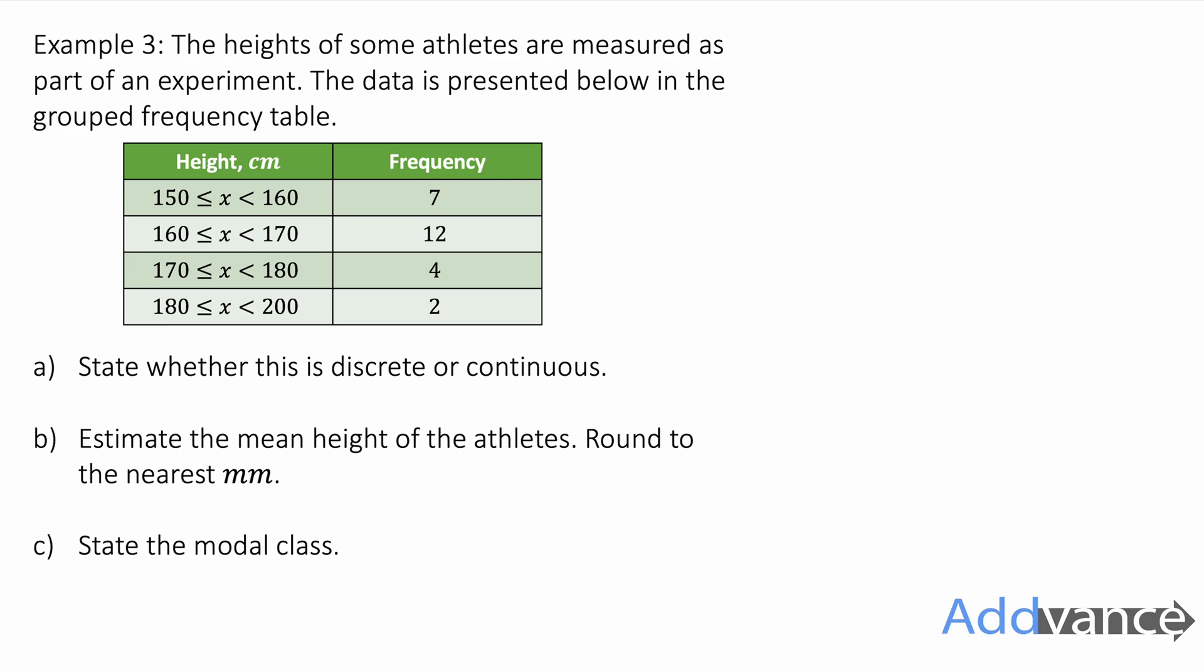I have one more example to show you. And this is for a grouped frequency table. It says the heights of some athletes are measured as part of an experiment. The data is presented below in a grouped frequency table. And it's got the height between 150 and 160. So it's a grouped frequency table. The heights are measured and put into groups.